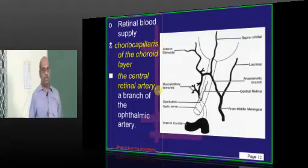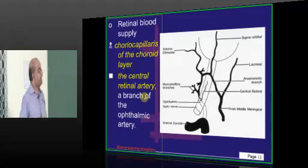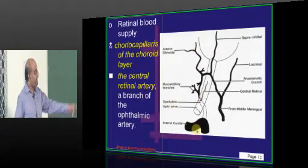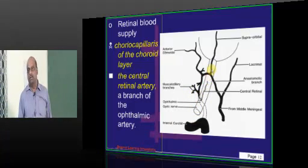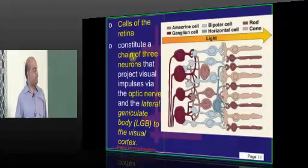What is the blood supply to the retina? Underneath the retina you have the choroid. So the choriocapillaris of the choroid will supply nutrients, and the central artery of the retina, which is a branch of the ophthalmic artery, is another important blood supply to the retina.